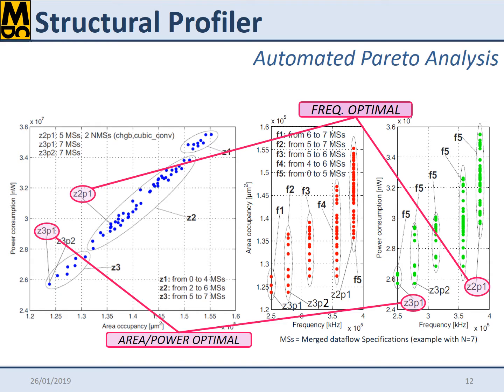This analysis identifies the optimal points in terms of area, power, and frequency. Area and power optimal points normally refer to the same substrate configuration, since we are currently considering static power consumption. The optimal frequency point may, on the contrary, be different.